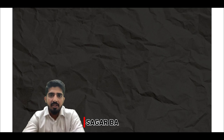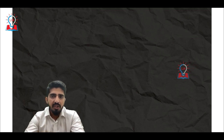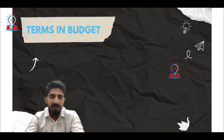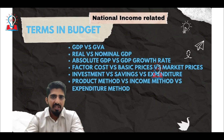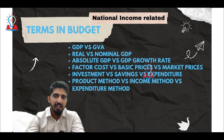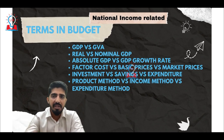Even as the government prepares itself to present the budget on the 2nd of February 2023, it becomes essential for us to understand some key terms which come in the budget every year. We focus on the first set of words related to national income today, and this series is going to cover these terms: GDP, GVA, Real and Nominal GDP, Absolute GDP vs GDP Growth Rate, Factor Cost, Basic Prices, Market Prices, and Investment Savings.